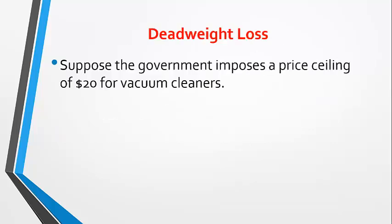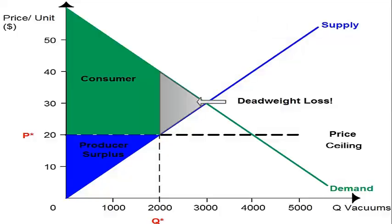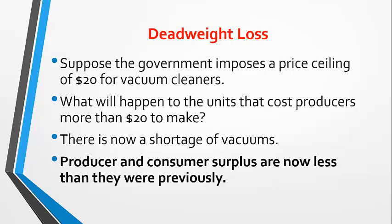Now suppose the government decides that no one should have to pay more than $20 for a vacuum, setting the highest price producers can charge at $20. Units that cost producers more than $20 to make obviously won't be produced. Producers will now supply only 2,000 vacuums to the market. There are still many consumers willing to pay more than $20, but they're not allowed by law, creating a large shortage. The gray triangle is a deadweight loss — those are the transactions not allowed to occur because of the price ceiling. Consumer and producer surplus are both less than they were previously.